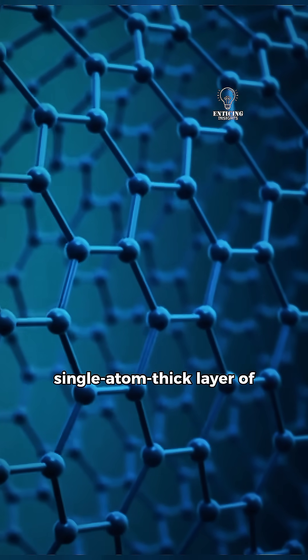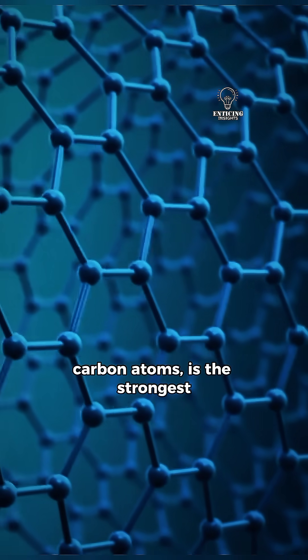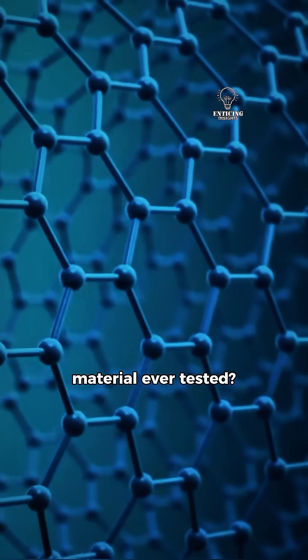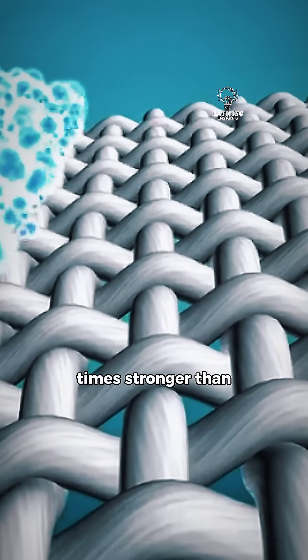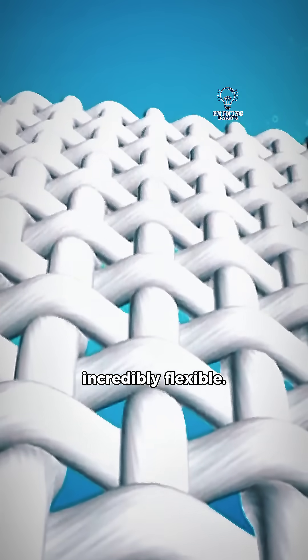Did you know that graphene, a single atom thick layer of carbon atoms, is the strongest material ever tested? This two-dimensional carbon lattice is 200 times stronger than steel while remaining incredibly flexible.